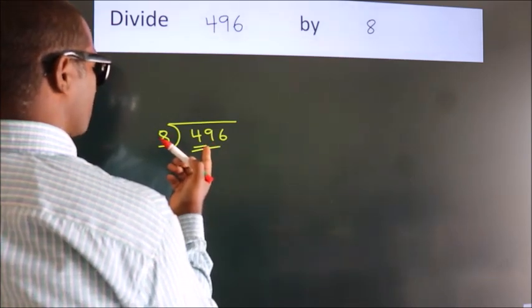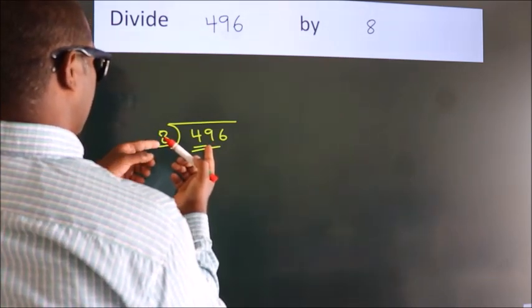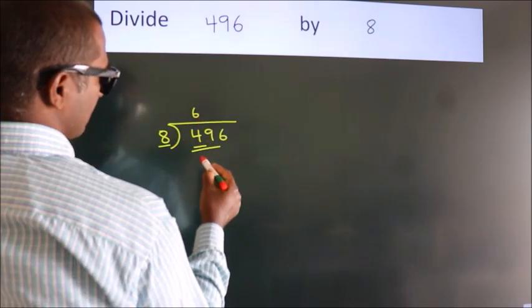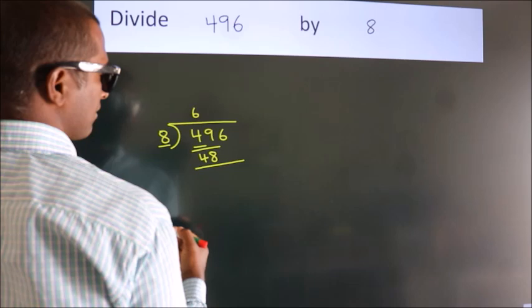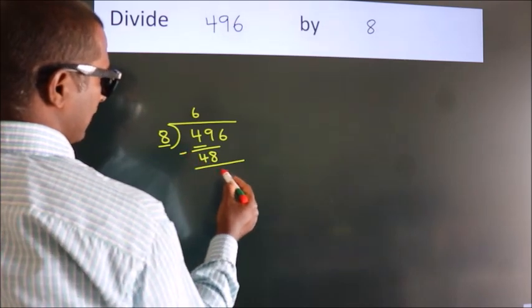A number close to 49 in the 8 times table is 8×6=48. Now we should subtract. We get 1.